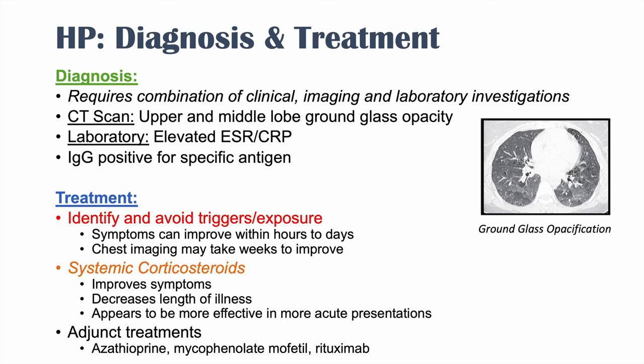In summary, diagnosis requires a combination of clinical, imaging, and laboratory investigations. CT scan shows ground glass opacity, and labs show elevated ESR and CRP. IgG against a specific antigen may provide supporting evidence but doesn't confirm the diagnosis. Once diagnosed, identify and avoid the triggers — a good exposure history is critical. Systemic corticosteroids are most effective in acute presentations, and adjunct treatments include azathioprine, mycophenolate mofetil, and rituximab.